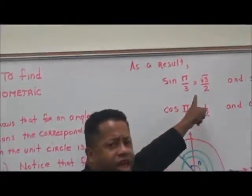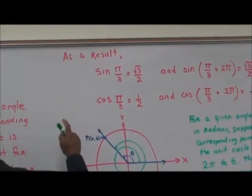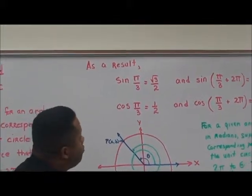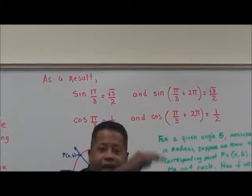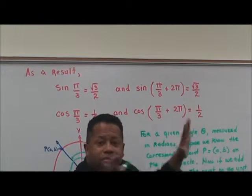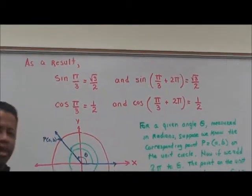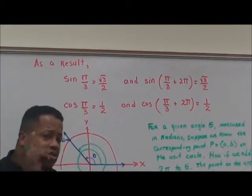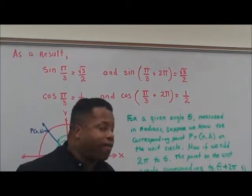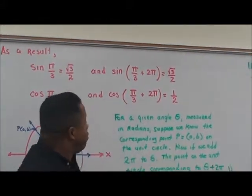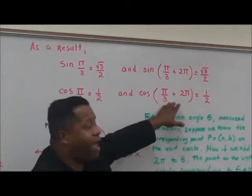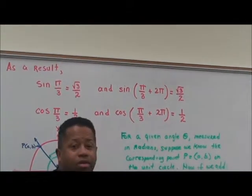As a result of figure B, the sine of pi over 3 equals the square root of 3 over 2. And when we add 2 pi to pi over 3, we get the same value. Similarly, the cosine of pi over 3 equals 1/2, and when you add 2 pi to pi over 3, you still get 1/2.